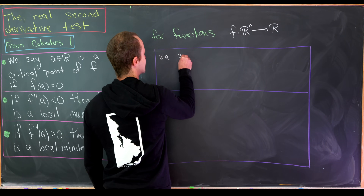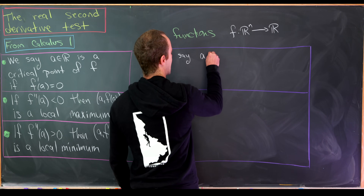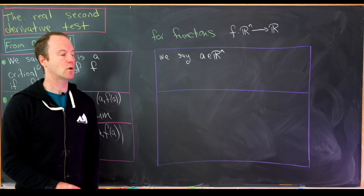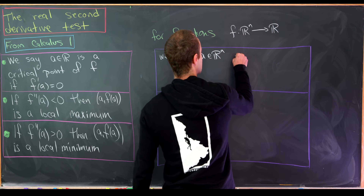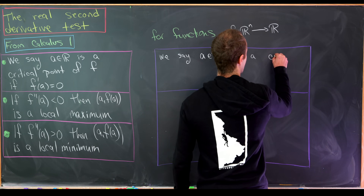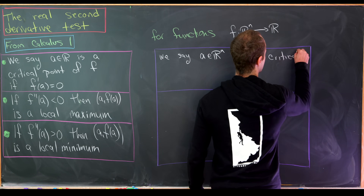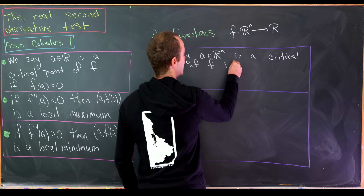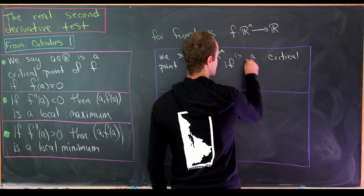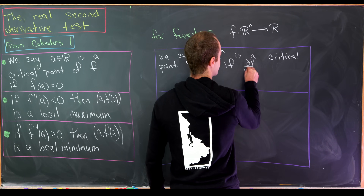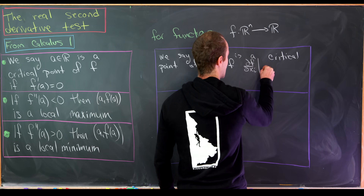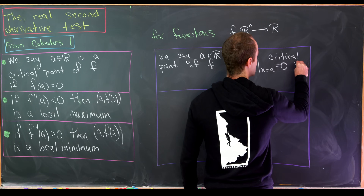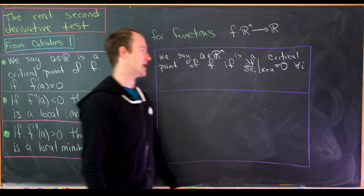We say that a point a from R^n — perhaps a list of numbers or a vector — is a critical point of f if the partial derivative of f with respect to x_i evaluated at x equals a is zero, for all i between 1 and n.